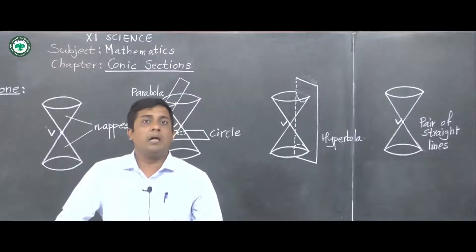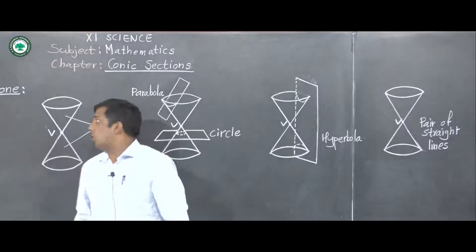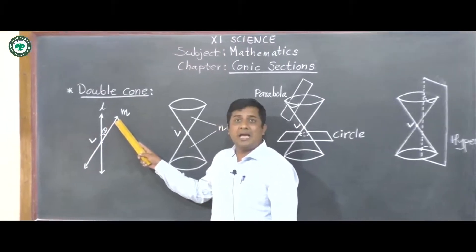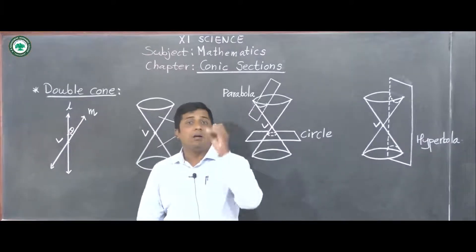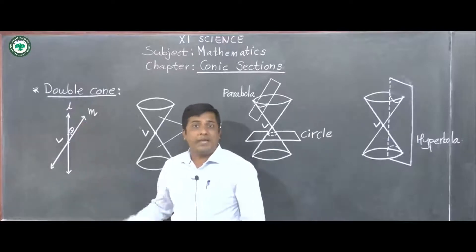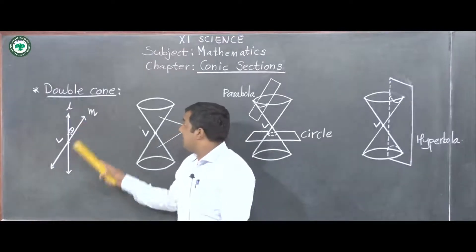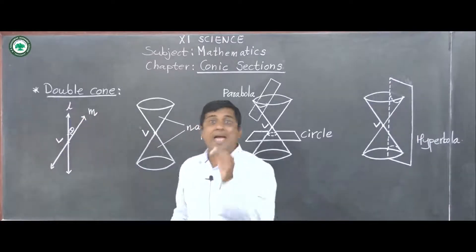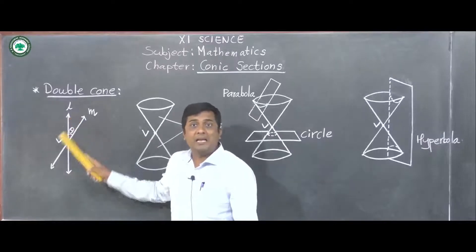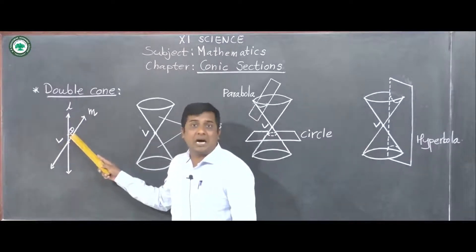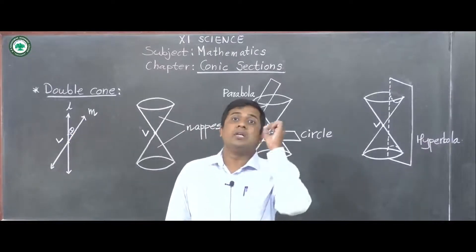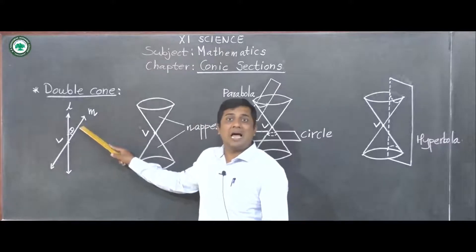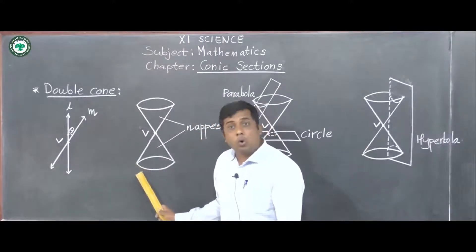To define the double cone, we consider one fixed line l and another fixed line m. If we rotate line m about line l, we obtain an angle theta which remains always constant.